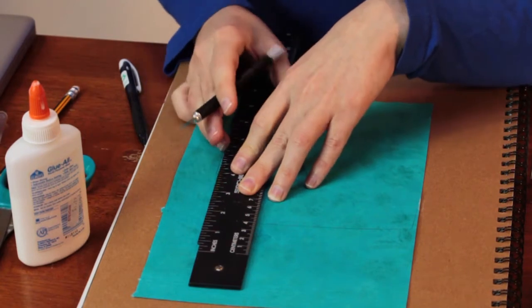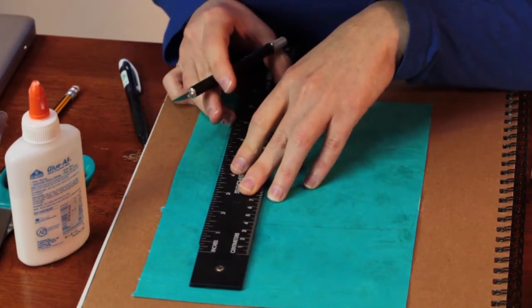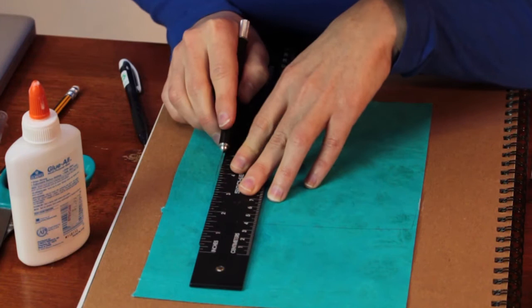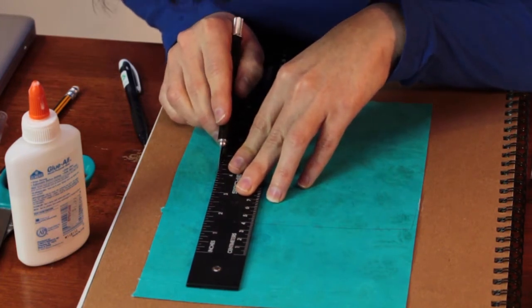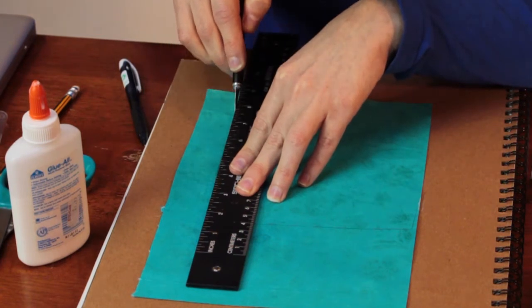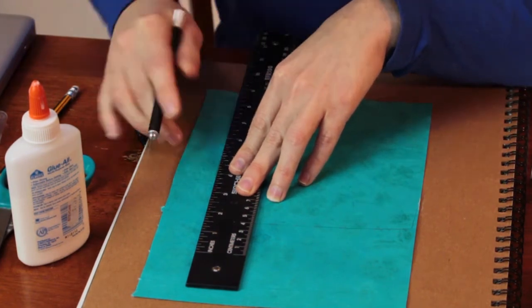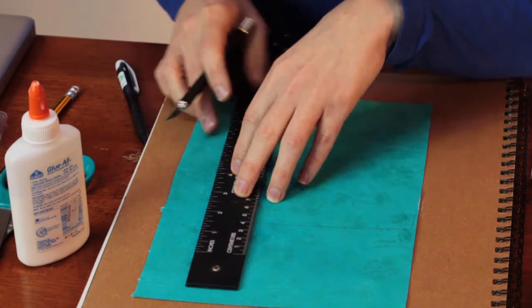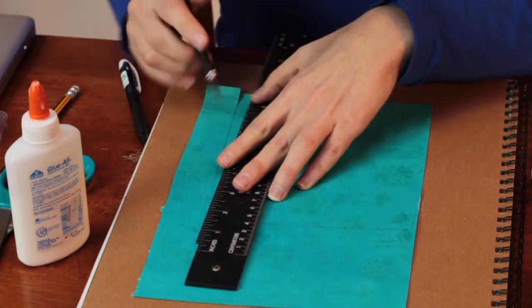For this you're going to want to go inside of the lines a little bit, not by too much, but you definitely don't want to make this too large. So maybe like a millimeter or so inside of your line is where you want to be cutting.